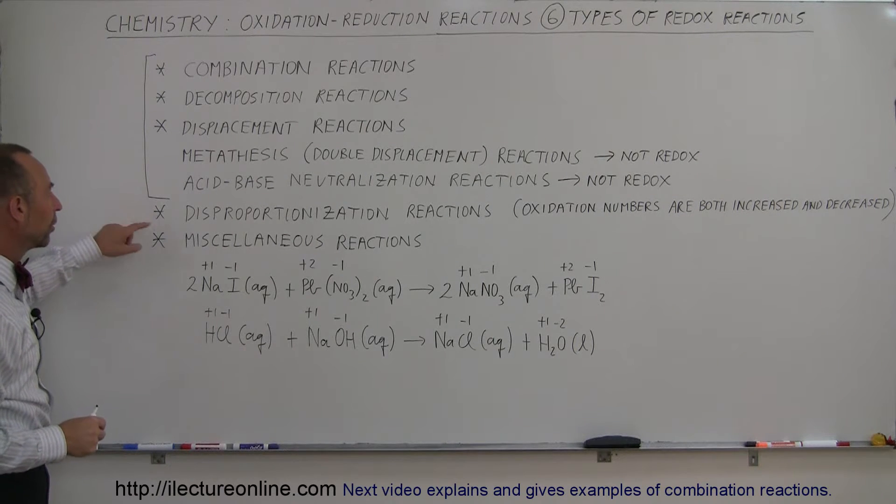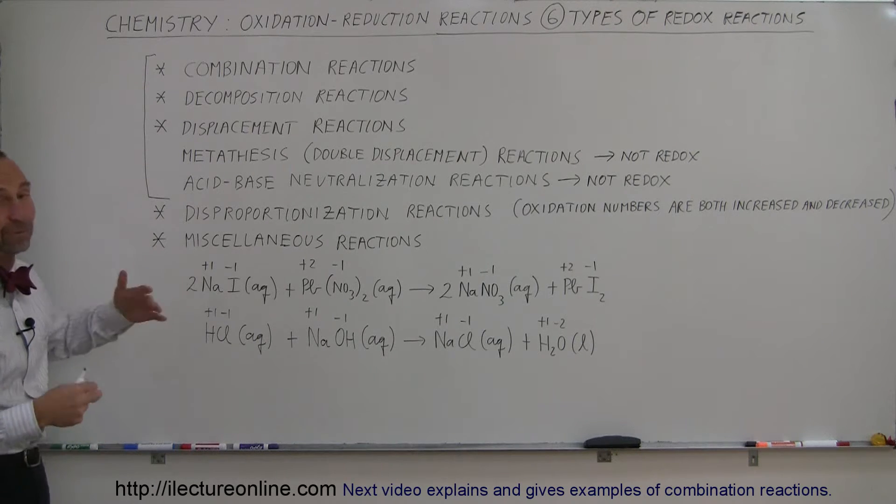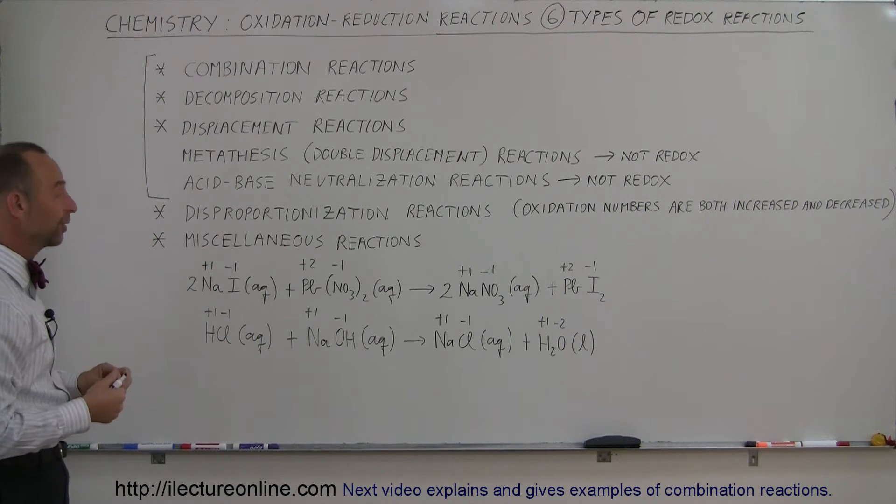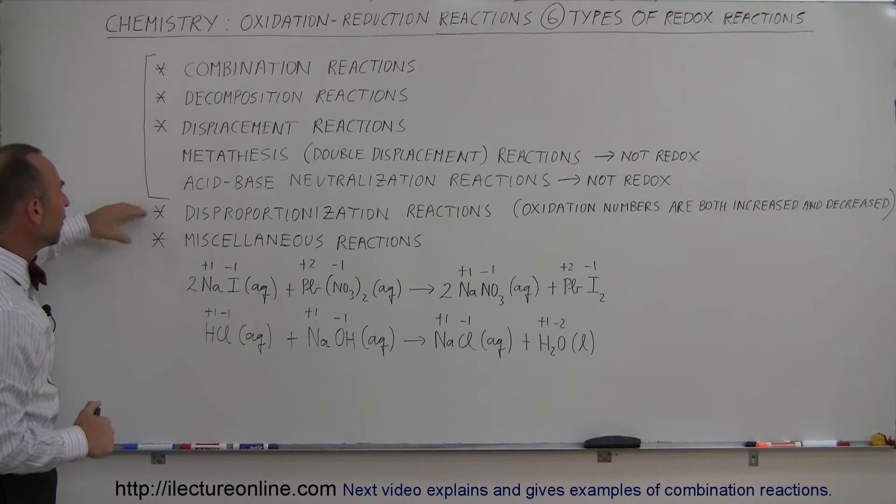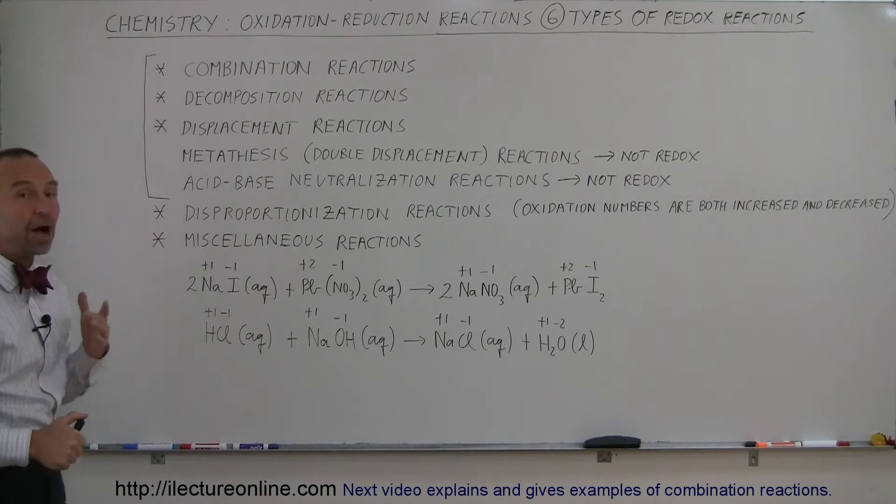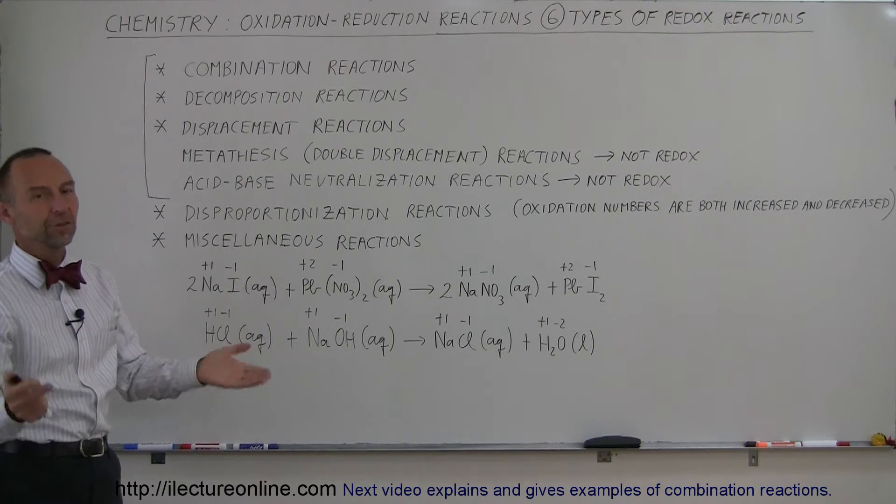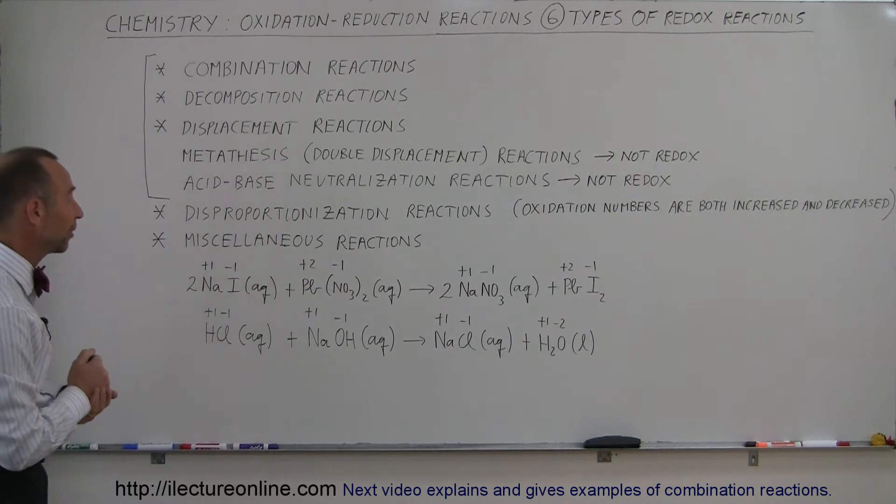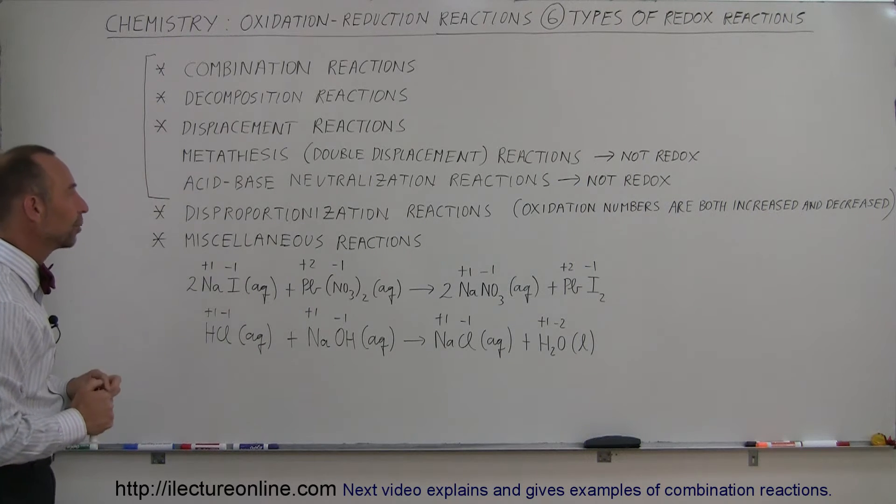Then there's a couple more called disproportionization reaction and miscellaneous reactions that don't meet any of the other criteria. Now, it turns out, of those seven, five are what we call oxidation reduction reactions. Sometimes you also say redox reaction to mean oxidation reduction reaction. Two of the seven, however, are not oxidation reduction reactions.